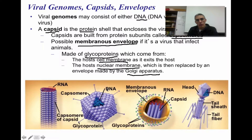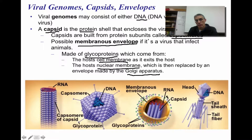Down here towards the bottom is a diagram to illustrate the structure of a virus, showing several different varieties. The genome or genetic material — in this case RNA — is enclosed by the capsid, which is created by proteins called capsomers. One variety has a membranous envelope enclosing the capsid, made of glycoproteins, adding an additional layer on the outside. Over here, you can see the bacteriophage, which also has a capsid on the outside, and in this case it's a DNA bacteriophage with the genetic material on the inside.